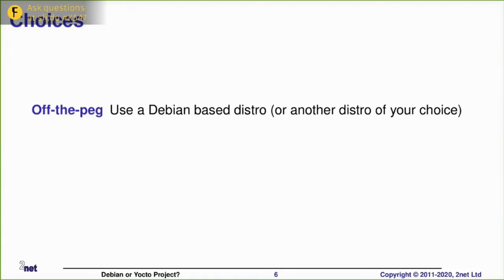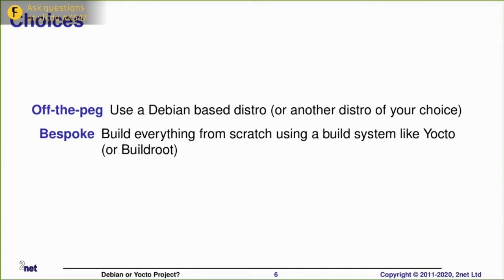I'm boiling it down to basically two options. You can go off the peg and use an existing desktop based distro such as Debian or any other distro of your choice. Fedora or Suze or whatever. Ubuntu is quite popular too. They're all basically the same in that they are off the shelf, fully ready to run distros. Or you can go bespoke. Rather than taking something that exists already, I can build my own distro from scratch using Yocto project is the most popular. But there are other build systems including build route, openwrt and a few others too.